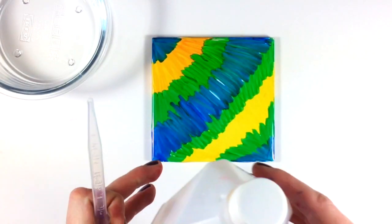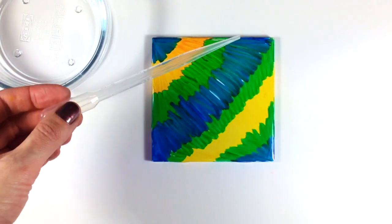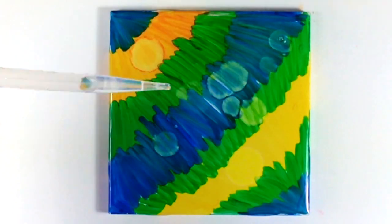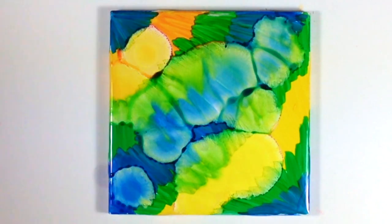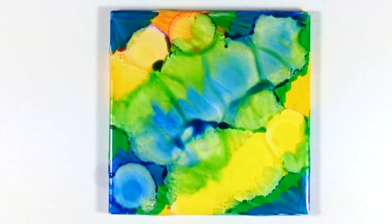Now that I've colored in my tile, I will take some rubbing alcohol and a pipette or dropper and add the alcohol to my tile. Here I'm just adding a few drops here and there to my tile, and I'm going to wait and let the alcohol spread out on the tile.